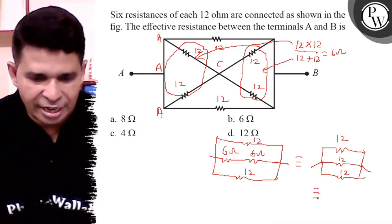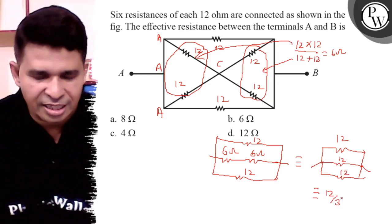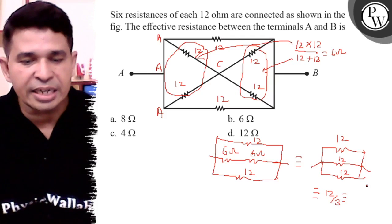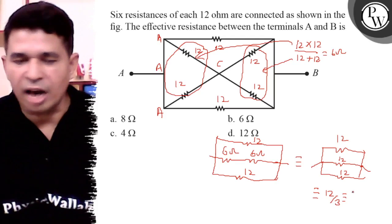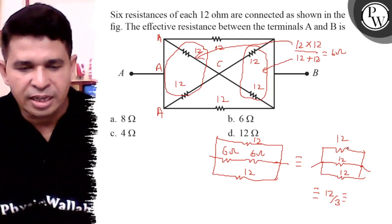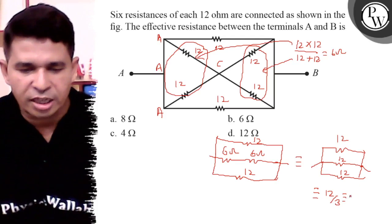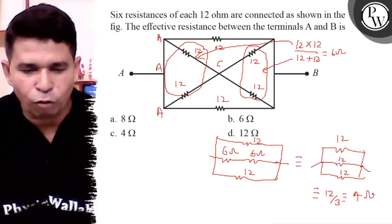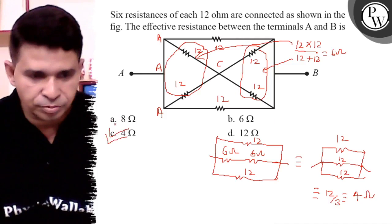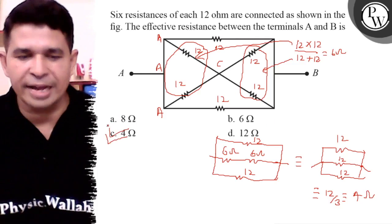So final answer is 12 ohm by 3. When n identical resistances each of value r are connected in parallel, equivalent resistance is r by n. Here r is 12 ohm, n is 3, so 12 ohm by 3 is 4 ohm. So final answer is 4 ohm. Thank you, all the best.